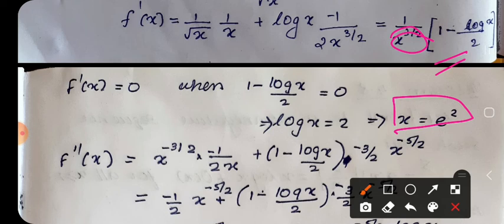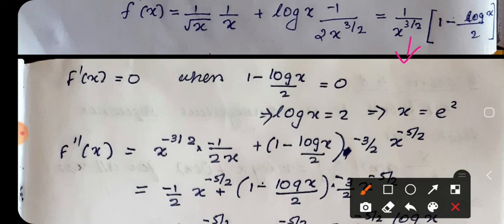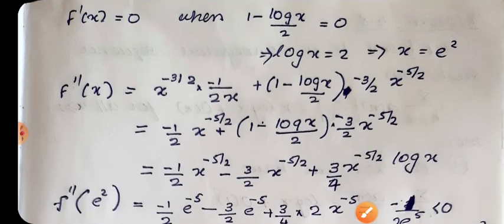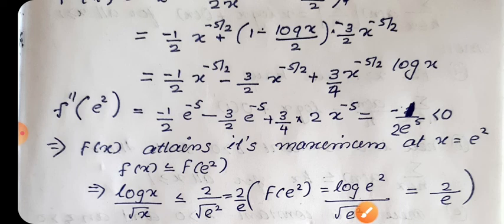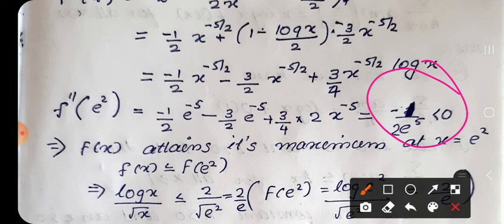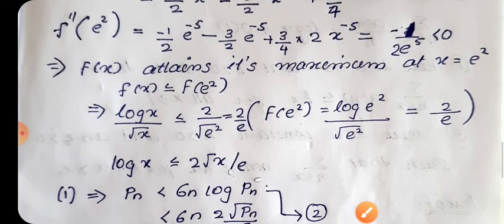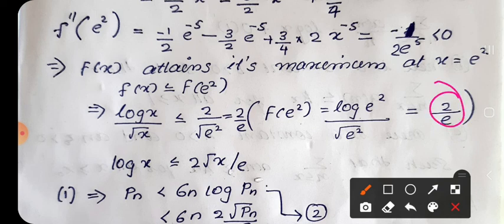At x = e², we check the second derivative using the product rule. We compute f''(x) involving 1/x^(3/2) and the factor (1 - log(x)/2). Substituting x = e² gives f''(e²) = -1/(2e^5), which is negative. Therefore x = e² is a maximum point. The maximum value is f(e²) = log(e²)/√(e²) = 2/e.